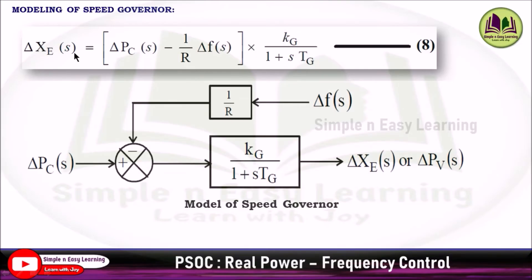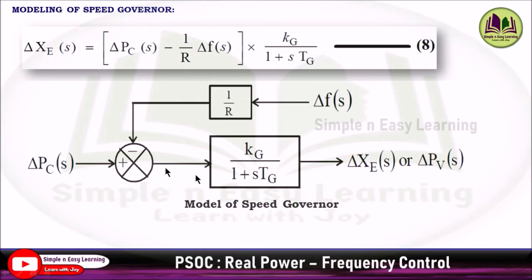From Equation 8 we can draw the block diagram model of the speed governor. The input is del_Pc, and del_f(s) feeds into a 1/R block hitting the negative terminal. The transfer function block is Kg/(1 + s·Tg), and the output is del_Xc. Based on the movement of del_Xe, steam flows to the turbine. This is the model of the speed governor.